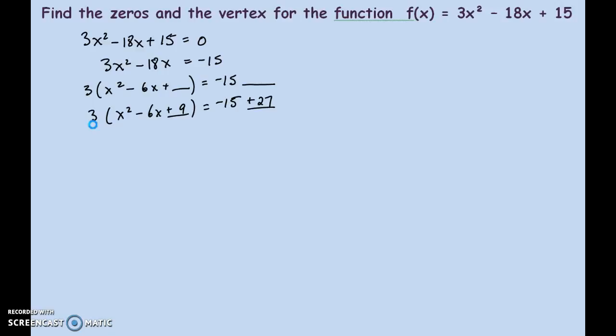We now have a perfect square trinomial in the bracket. So, we can rewrite that as a binomial squared. On the right-hand side, it simplifies to 12.